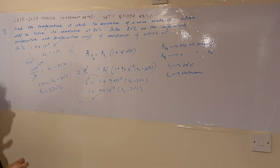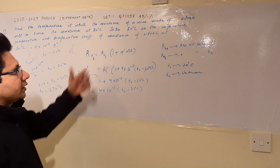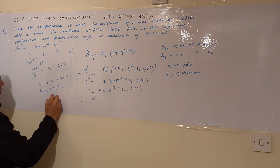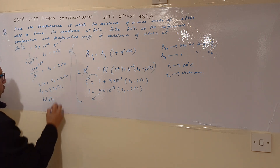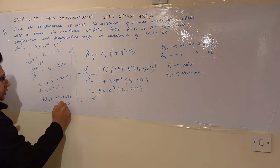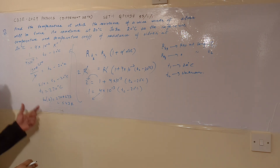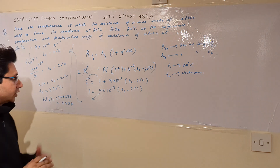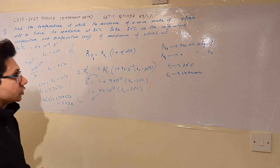So the temperature at which the resistance doubles with respect to its value at T1 is 270 degrees Celsius. Converting to Kelvin, we add 273: 270 plus 273 equals 543 Kelvin. So the final answer is 543 Kelvin, or equivalently 270 degrees Celsius. Hope you understood the solution — thank you.